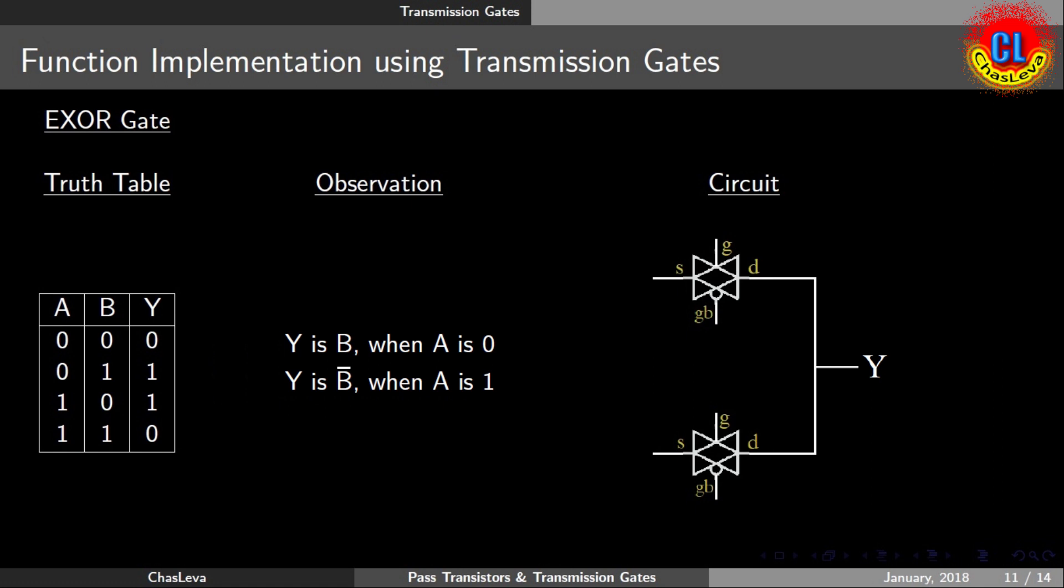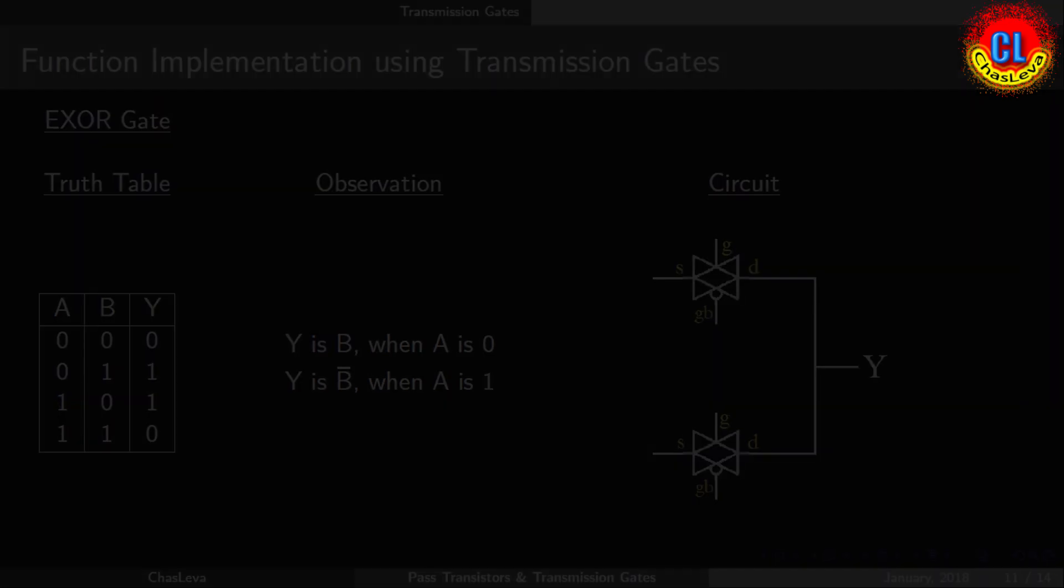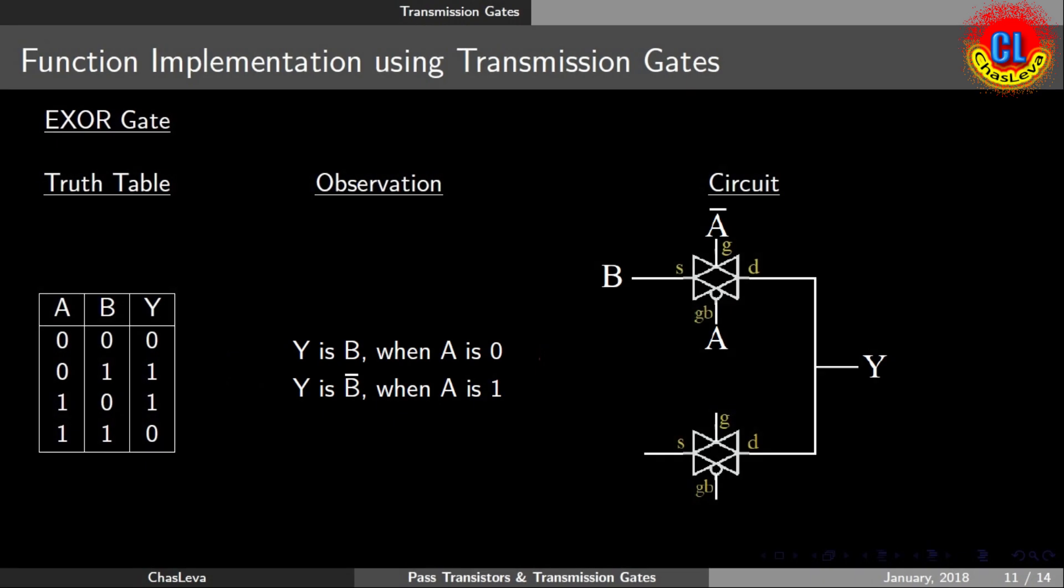G and G bar denoted here is GB. We only need to consider the gate input G. The other gate terminal GB will be connected with complement of the input connected to G. The gate terminal G of the transmission gate at top is connected with A bar and source with input B.